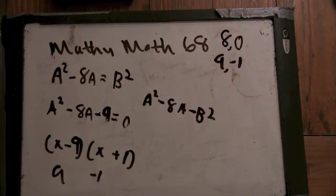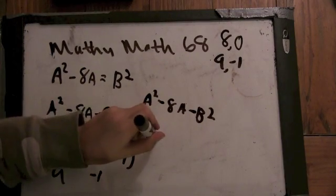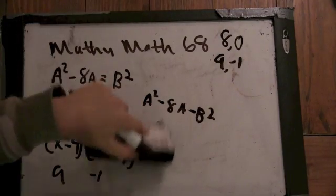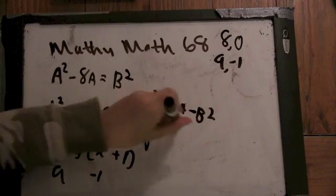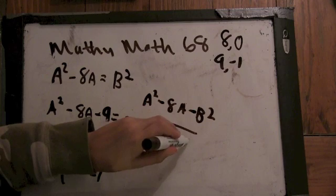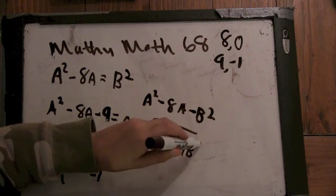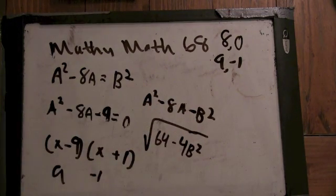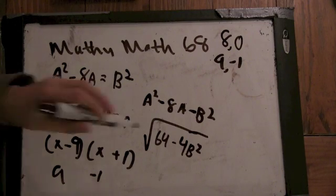So what's the quadratic formula say? Or your discriminant that you were just looking at? Not b squared. 64.